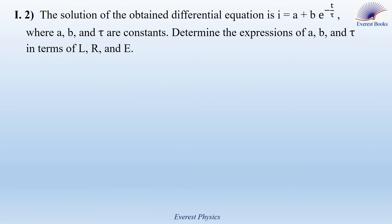Moving to part I2: the solution of the obtained differential equation is I equals A plus B times e to the power minus T over tau, where A, B, and tau are constants. We need to determine the expressions of A, B, and tau in terms of L, R, and E. We will differentiate the expression of the current with respect to time and substitute this derivative into our differential equation.